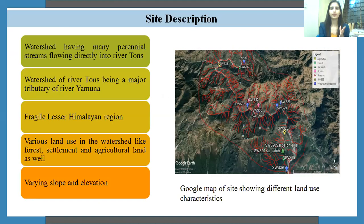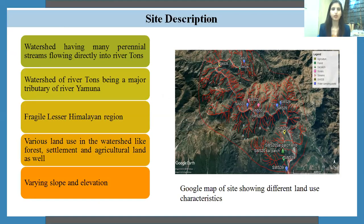Just to brief about the site — this is the Google Map view of the watershed, which falls in the Lesser Himalayan region. The Tones River is a major tributary of the Yamuna, one of the most important rivers in the Indian subcontinent. This watershed has varying slope and elevation and other features which we will discuss further.